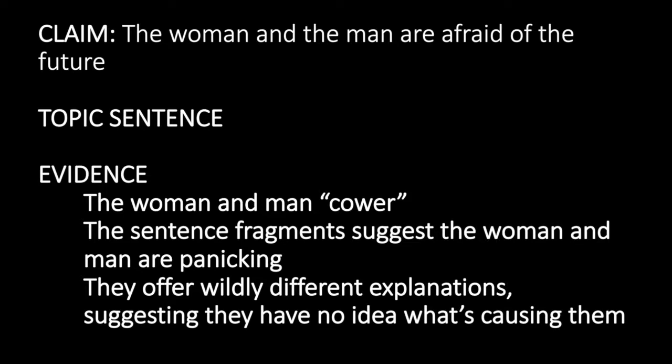You might write about how the woman and the man cower, suggesting that they are really quite terrified. You might write about how their dialogue consists of sentence fragments, indicating that they're panicking. And then you might write about how they offer wildly different explanations for the sounds of the explosions, suggesting they have no idea what's causing them, suggesting they have no idea what might be coming toward them, or what might happen to them next in the future. You might write about all of these pieces of evidence in one paragraph, or you might break them up into several paragraphs in succession, each one focusing on analyzing a different piece of evidence. But taken together, this evidence from the text, which is based on your close reading, will argue that the woman and the man are really afraid of what might be coming toward them, of the future, which to them is very uncertain. Then, move on to the next claim.